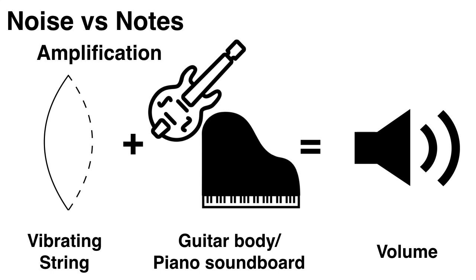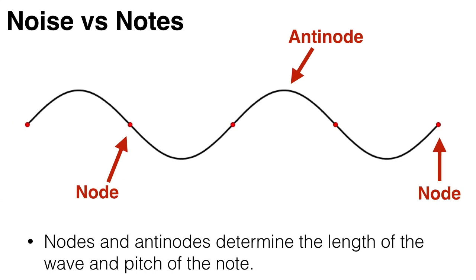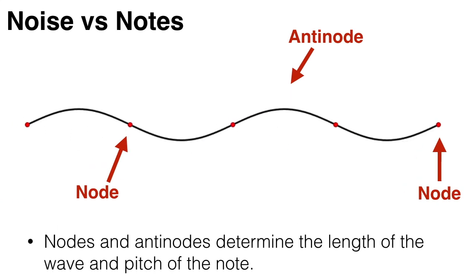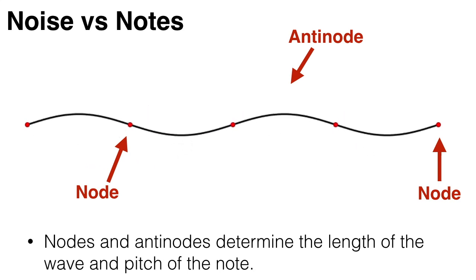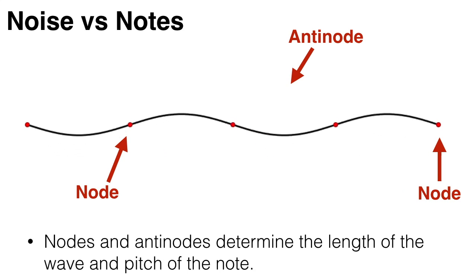The body of a guitar or the soundboard of a piano function in the same way. All standing waves have spots where the water level or string doesn't move at all. These are called nodes. This includes both ends of a string which are fixed. And there are also other spots where the water level goes up and down a lot. These are called anti-nodes. These determine the length of the wave and therefore the pitch of the note, which is the topic of the next video.